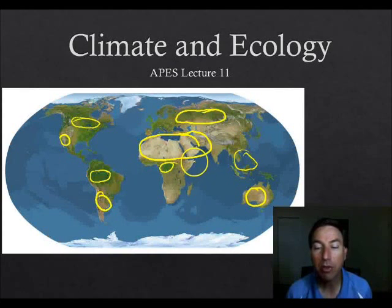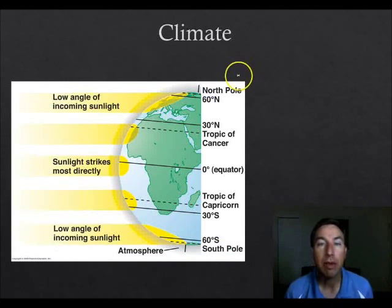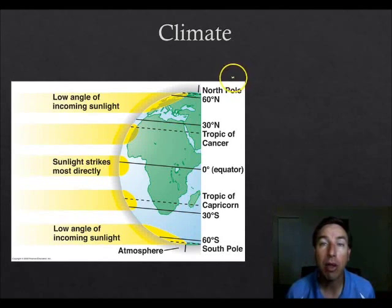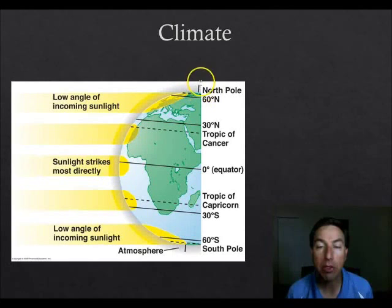We want to figure out exactly why that's going on — how biomes are distributed throughout the planet. Climate is the main driving force for the vegetation, which then drives the animal community for every biome on the planet.